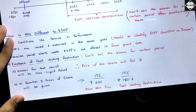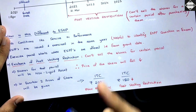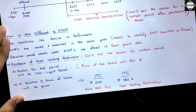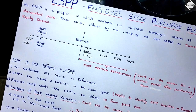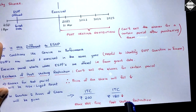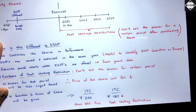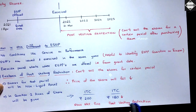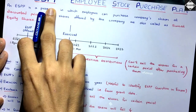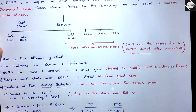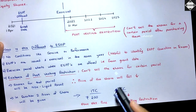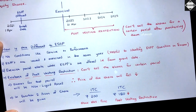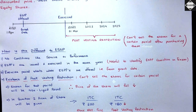In the exam, two prices are given: one is the stock market price traded on stock exchanges — which is useless for us in ESPP problem-solving. The other is the fair value of shares under the ESPP plan, which has taken into consideration the post-vesting restriction. You have to ignore the stock market price and use only the fair value of shares under the ESPP scheme for your calculations.